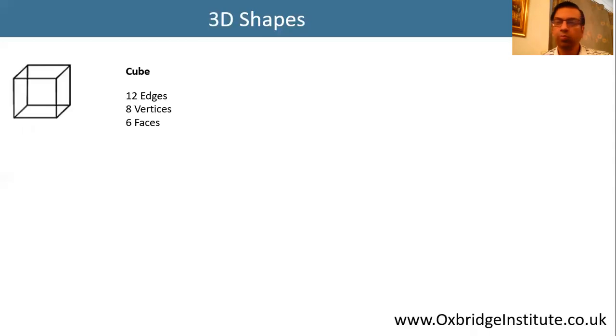Let's look at the cube first. A cube has 12 edges, 8 vertices, and 6 faces.